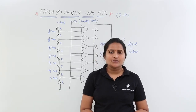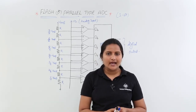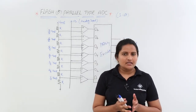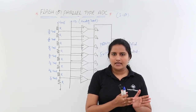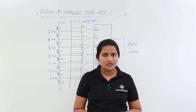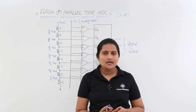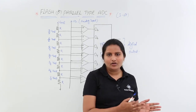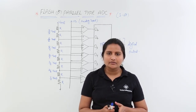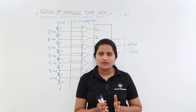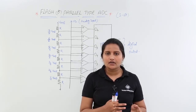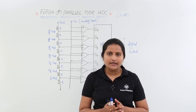In this class we are going to discuss about flash or parallel type analog to digital converter. Up to now we discussed about two converters: counter type ADC, which takes 2^n minus 1 clock cycles — meaning it is very slow — and successive approximation type, which was somewhat better, requiring only N clock cycles for conversion.